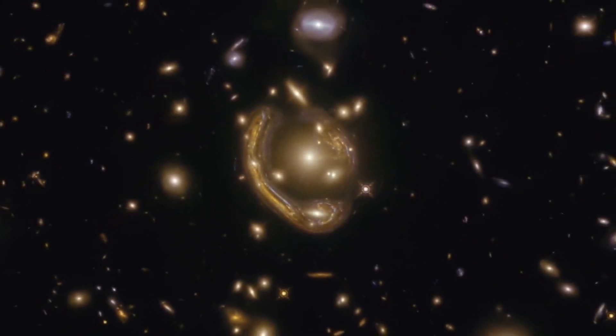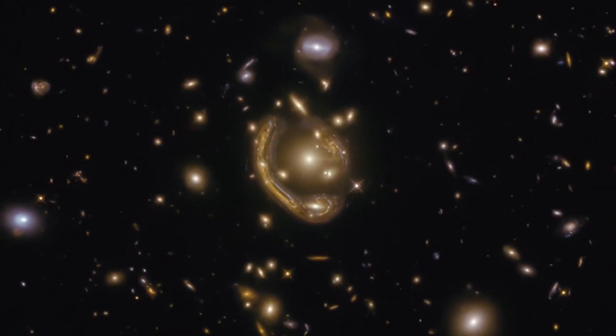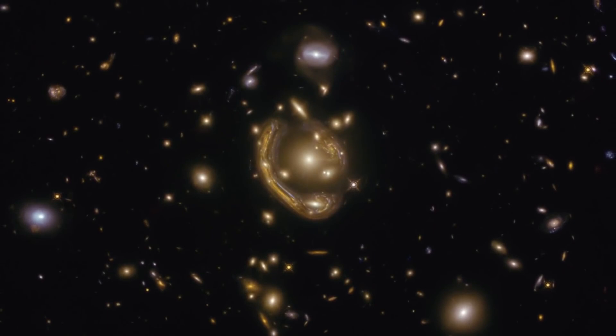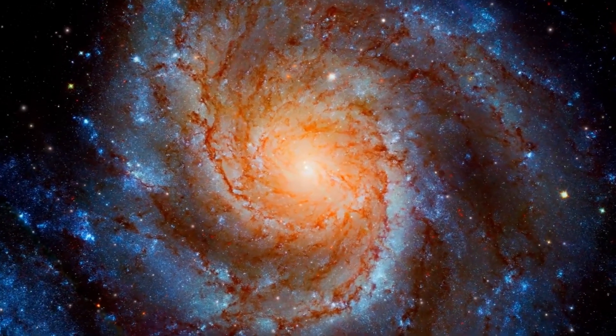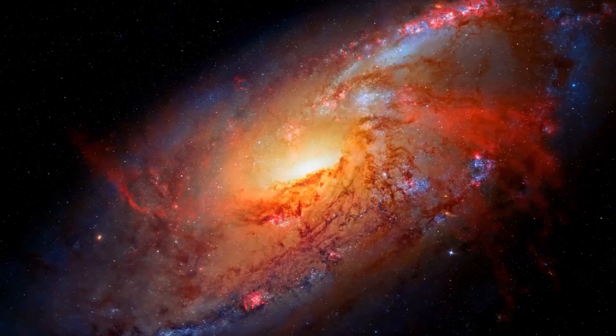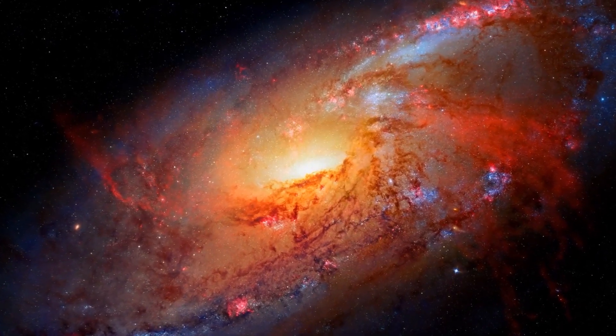The massive, compact, quiescent galaxy, or fossil galaxy, is a particular type of galaxy that has stopped forming new stars and is considered a possible precursor to the giant elliptical galaxies.